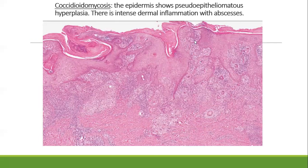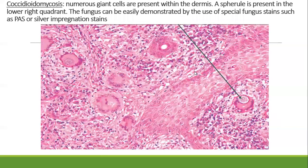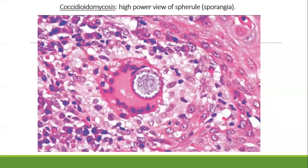The epidermis, like in blastomycosis, shows pseudoepitheliomatous hyperplasia, and the dermis is again associated with suppurative granulomatous inflammation. Numerous giant cells are present, with spherules visible within the giant cells, highlighted by special fungal stains like PAS or silver impregnation stains. This high-power view shows the spherule or sporangia.